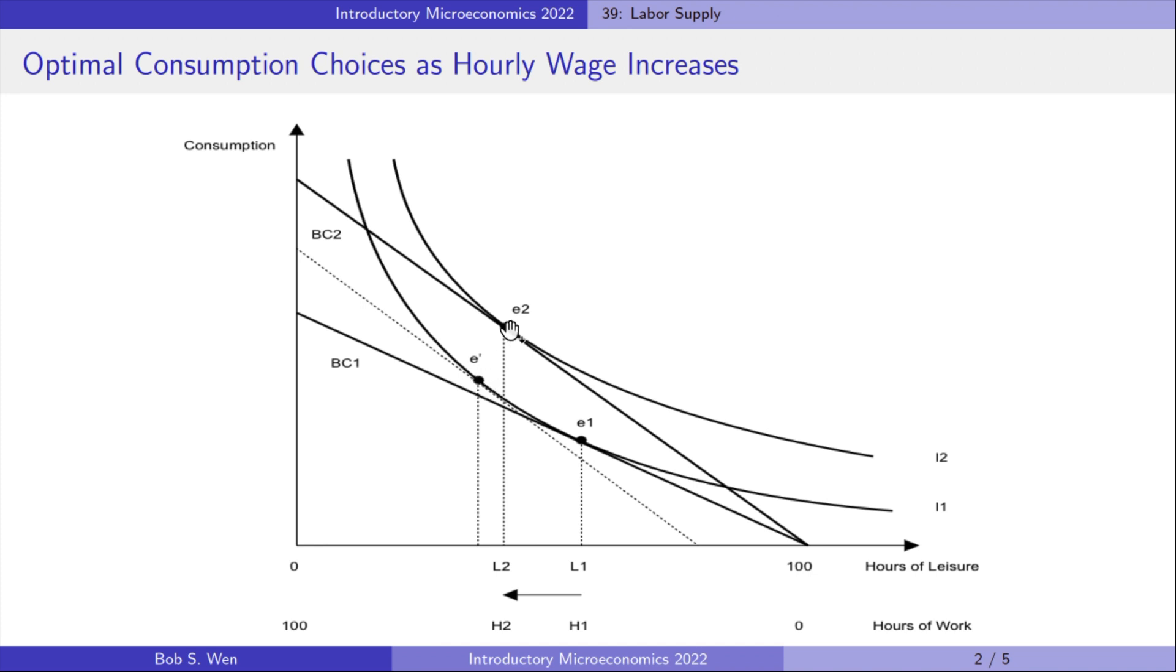The movement from E prime to E2 is the income effect. The increase in hourly wage makes Amy richer and she can afford more of both goods. The total effect of the wage increase on leisure is that the hours of leisure reduces from L1 to L2.